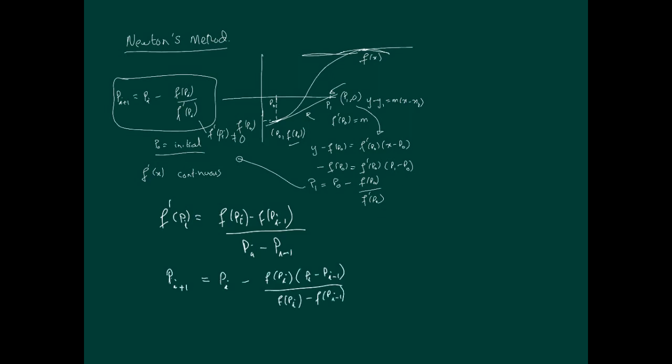By using this approximation of the derivative, we end up with another different iteration method, and this is called the secant method. Let's do an example of Newton's method.